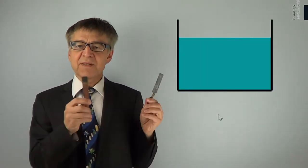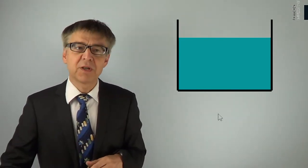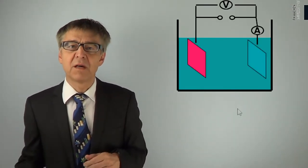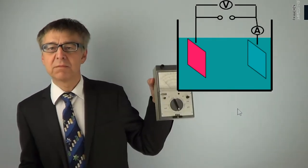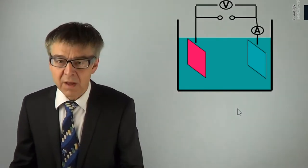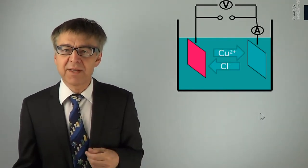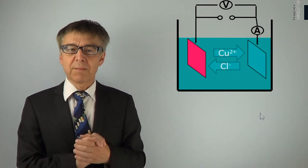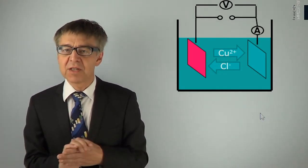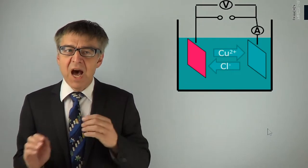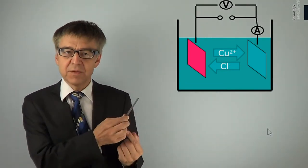Let's place two electrodes into an electrolyte, possibly apply a voltage, and measure a current. The current strength is caused by the migration of ions, which can be quantified by the ionic mobility and ionic conductivity. However, what happens to the ions at the electrodes?